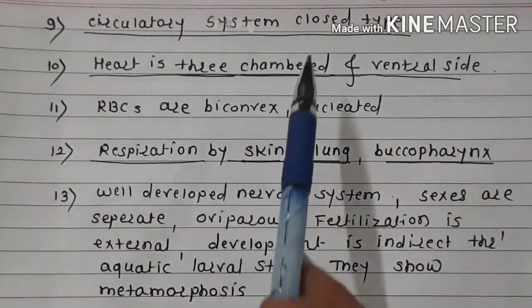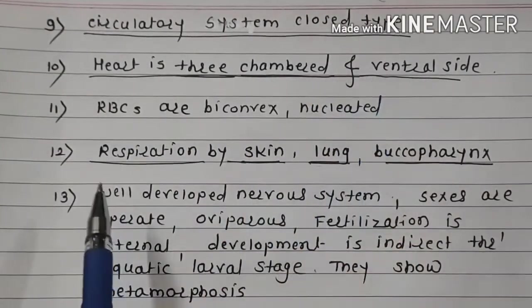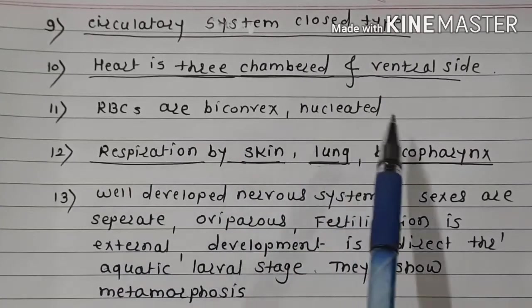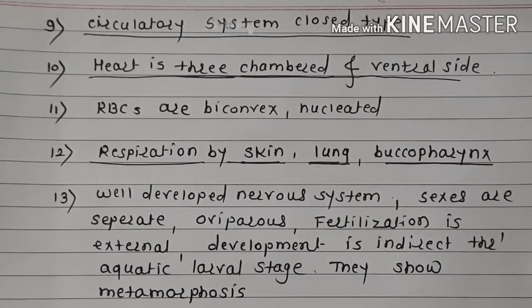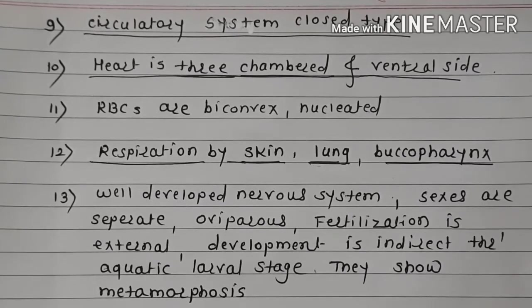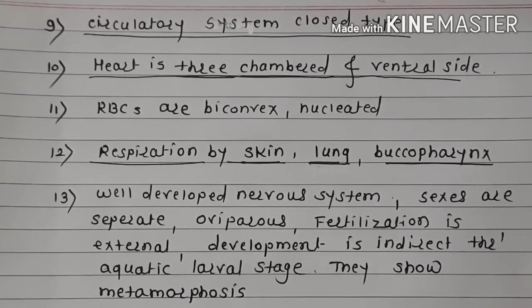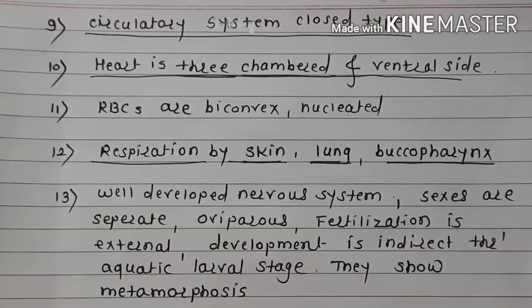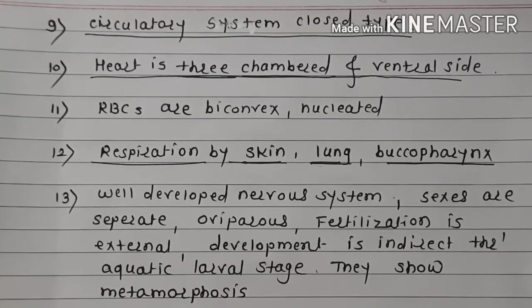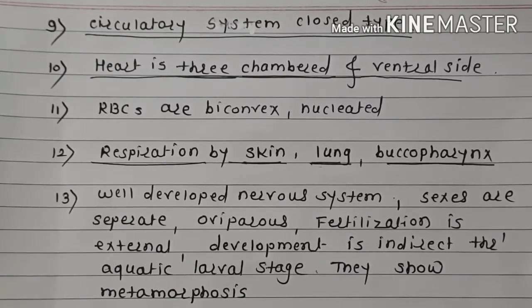Circulatory system is of closed type. Heart is three-chambered and ventral in position. The RBCs are biconvex and nucleated. Respiration is by skin, lungs, and buccopharynx.